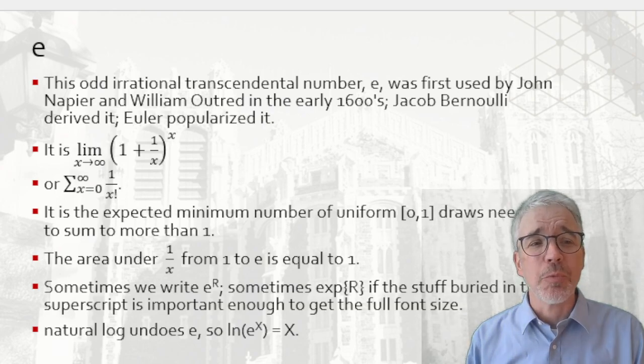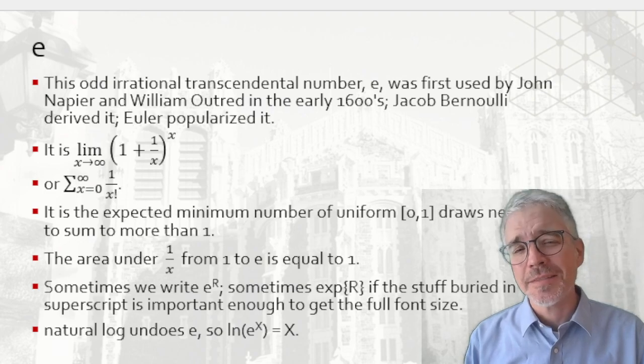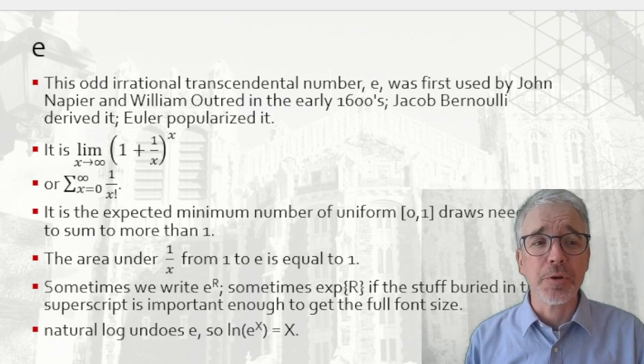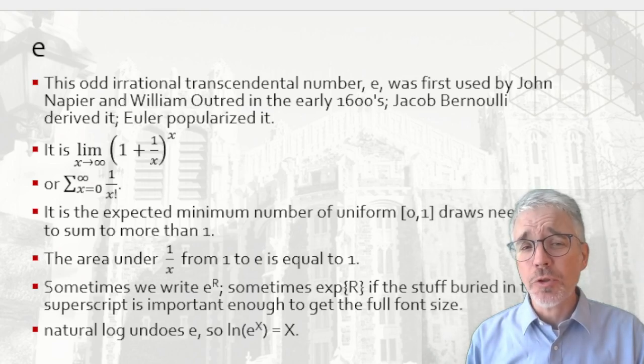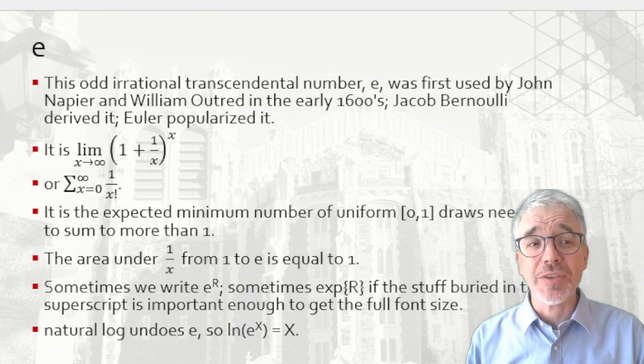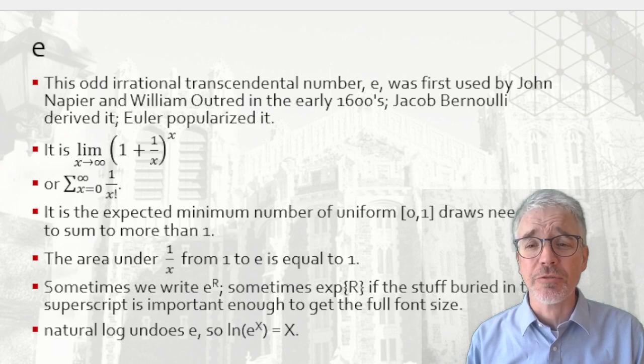Anyway, sometimes we write the number E to the R power. Sometimes we write EXP bracket R. That's if the stuff in the superscript is important enough to get the full font size. The opposite of E is the natural log. So if I take the natural log of E to some number x, the result is x. So the natural log is the inverse of the exponential function, or E. And that's why we often take logs when showing the graph number that grows exponentially.